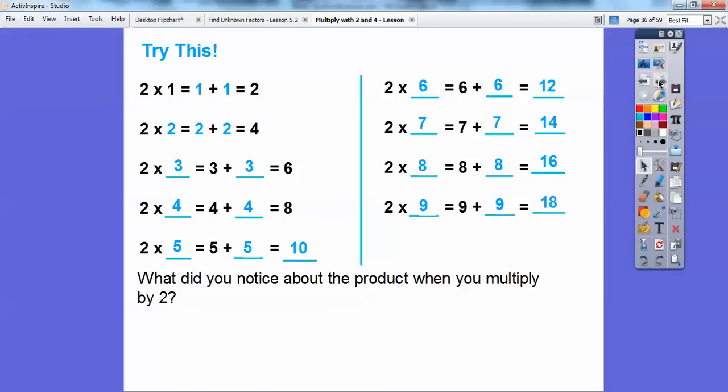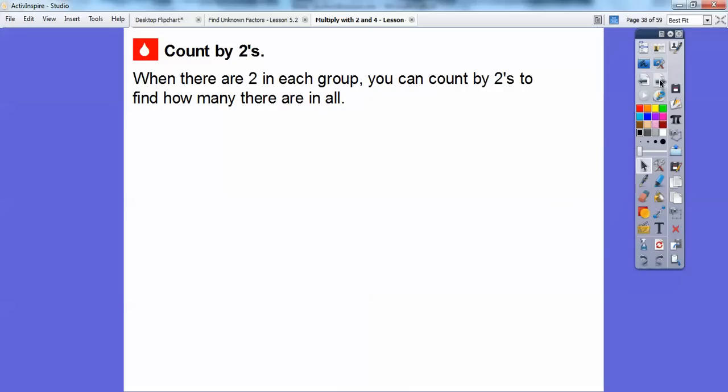And then here, so what did you notice about the products when you multiplied by 2s? The products are these final answers: 2, 4, 6, 8, 10, 12, 14, 16, and finally 18 right there. So what did you notice about those? Well, those are all nice, even counting numbers. So the products of 2s always gave us an even number. All right, so let's count by 2s. When there are 2 groups in each, you can count by 2s to find out how many there are in all.